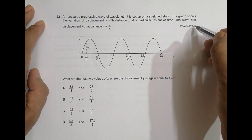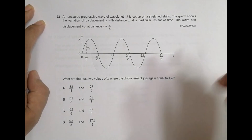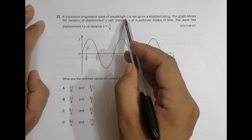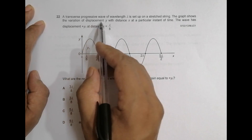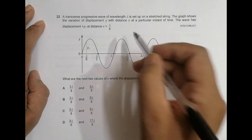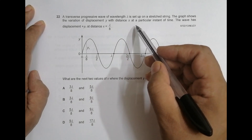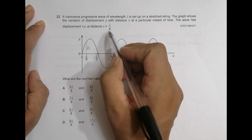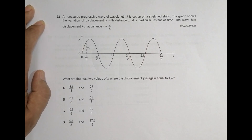Hello folks, this is your 2021 major paper 1, question number 22. It is concerned with the chapter on waves. As you can see, there is a diagram of a transverse progressive wave of wavelength lambda set up on a straight string. The graph shows the variation of displacement y with distance x. At a particular instant of time, the wave has displacement plus y at distance x equal to lambda by 8. Plus y means it is an upward displacement.